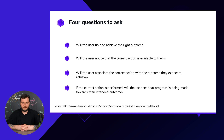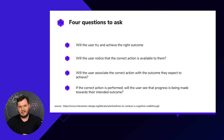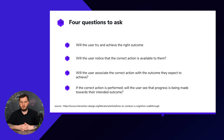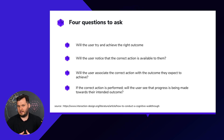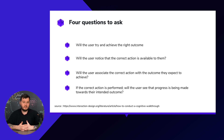The third question is: will the user associate the correct action with the outcome they expect to achieve? This relates to Norman's heuristics — will the expected outcome actually happen? For example, when I press 'Add to Cart,' I expect the product to be added to my cart. That is the right outcome. If yes, that's good. We don't want anything unexpected happening to the user.